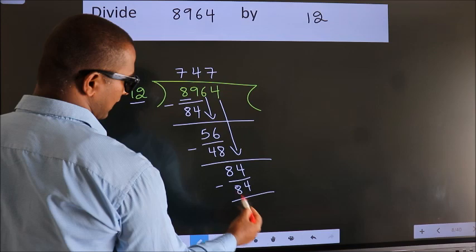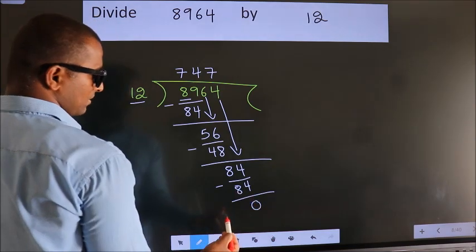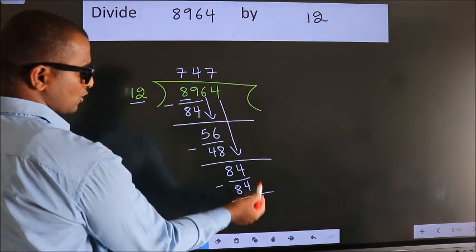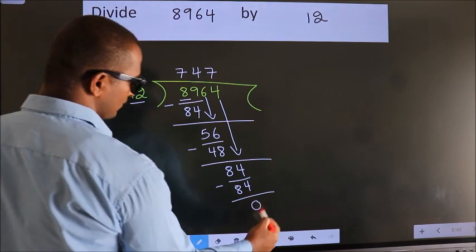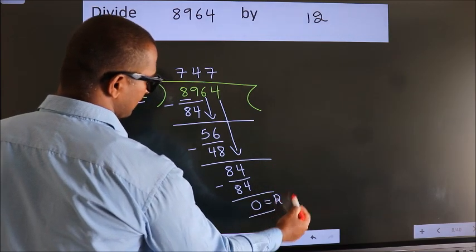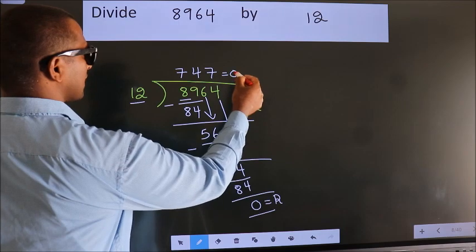Now we subtract. We get 0. No more numbers to bring down. So we stop here. This is our remainder. This is our quotient.